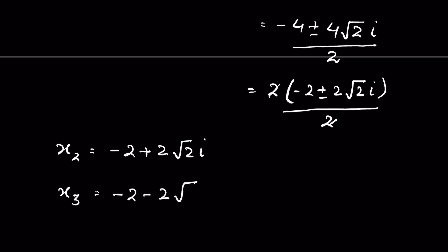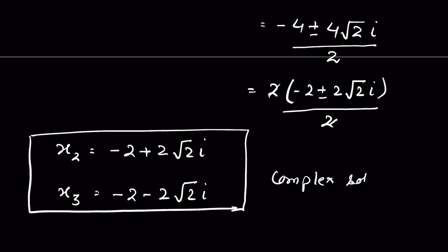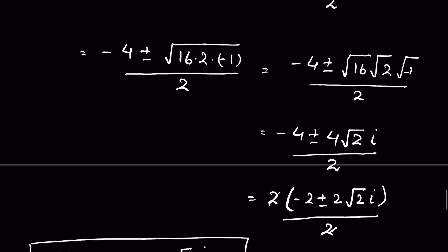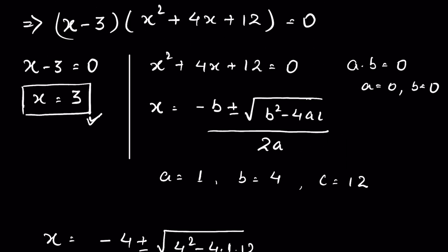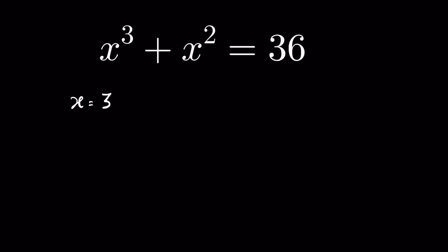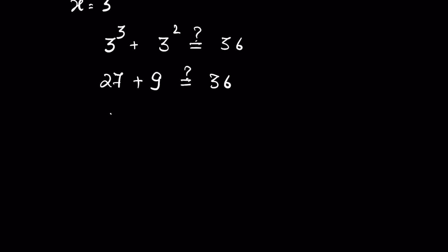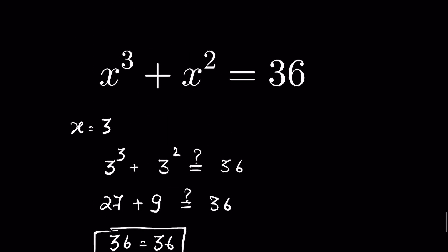The two complex solutions are x = -2 + 2√2 i and x = -2 - 2√2 i. The only real solution is x = 3. We can verify: 3³ + 3² = 27 + 9 = 36, so LHS = RHS and the answer is verified. x = 3 is the only real solution.